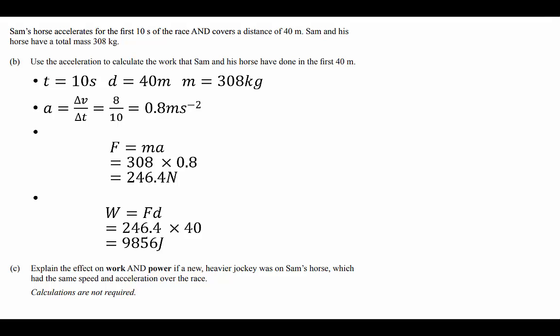Part C: explain the effect on work and power if a new heavier jockey was on Sam's horse which had the same speed and acceleration over the race. Now for this one we're going to use equations for work and power and we're going to talk through what's happening with each of the terms in those equations and use that to support our answer.